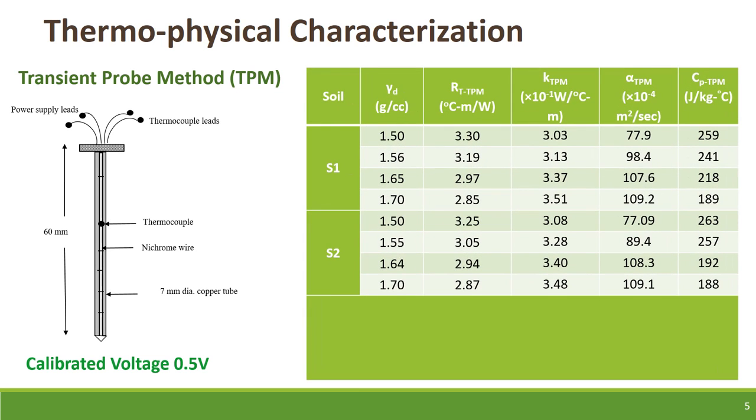Employing this single needle transient probe, we have got thermal resistivity, thermal conductivity, diffusivity and specific heat value of two different soil S1 and S2 for four different dry density. This particular properties of the material tell the potential of those soil samples in terms of thermal response.